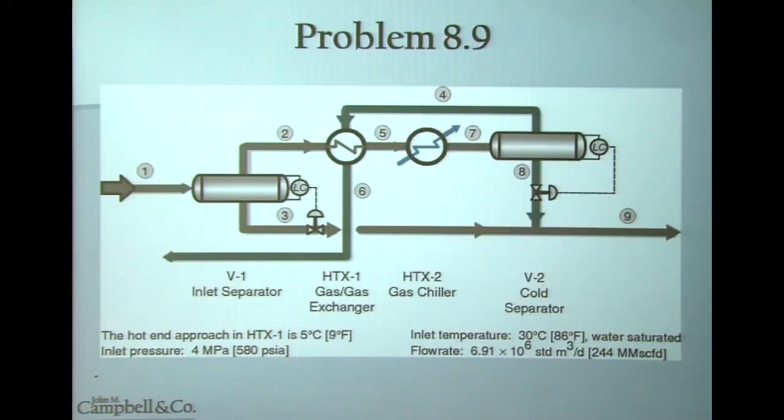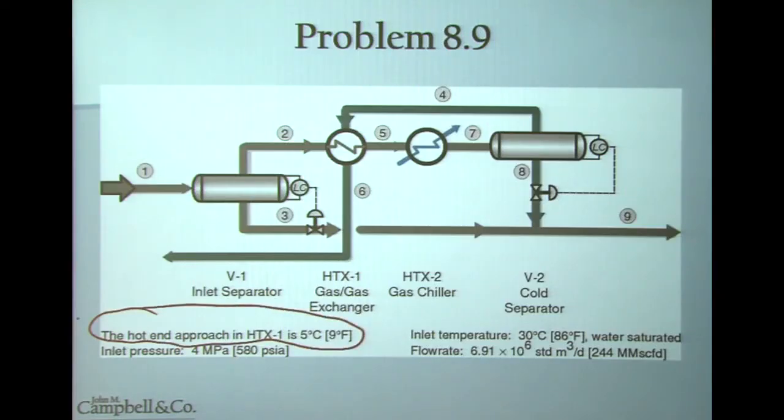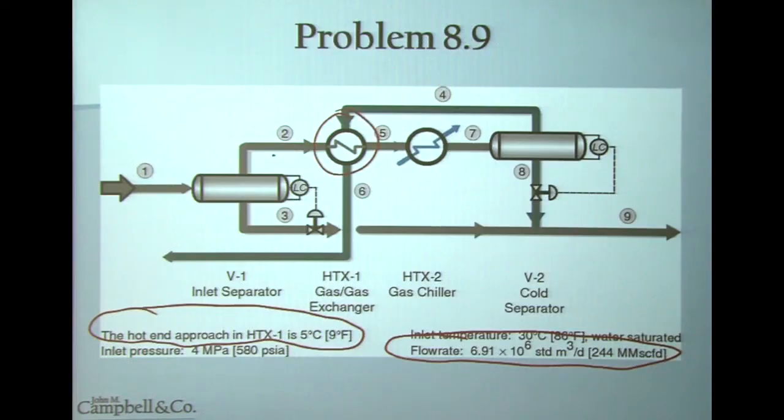So what we do in the G4 course is take this problem and weave it through all the modules for the two-week period. The problem as shown on this slide may appear to be pretty straightforward. What we will talk about in class is exactly what we mean by a hot-end approach, the flow rate of 6.91 million standard cubic meters a day — where is it, is that stream one or stream six, and how do you know? We will also talk about the effects that characterization may have on the calculation of your gas-to-gas exchanger and on your chiller.